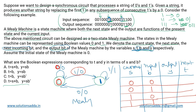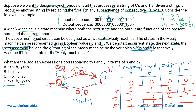When current state s=0 and input b=0: we loop into the same state, so next state t=0 and output y=0. When current state s=0 and input b=1: this transition moves us to state 1 with output y=0. When current state s=1 and input b=0: the next state is 0 and output y=0. Finally, when current state s=1 and input b=1: we stay in the self-loop, so next state t=1 and output y=1.